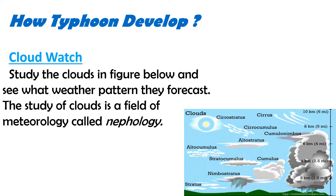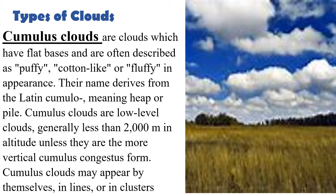First, you have to look at the atmosphere — that is where you determine the weather. You have to watch the clouds. If the sky is clear, then the weather is good. Cloud watching means studying the clouds to figure out what weather pattern they forecast. The study of clouds is a field of meteorology called nephology.